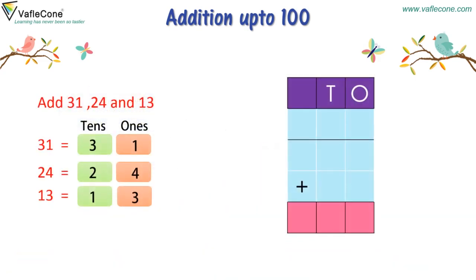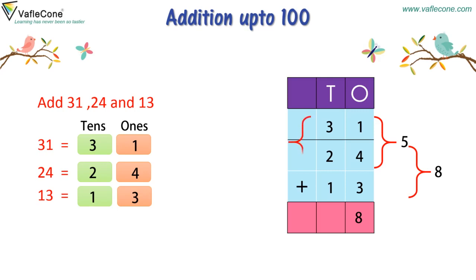Addition starts with arranging addends in columns as per their place value. Now, adding numbers at the ones place: 1 plus 4 is equal to 5, and 5 plus 3 is equal to 8. So we write 8 in the ones column. Then, adding numbers at the tens place: 3 plus 2 is equal to 5, and 5 plus 1 is equal to 6. So we write 6 in the tens place. The sum of 31, 24, and 13 is 68.